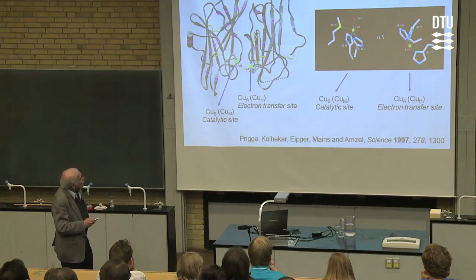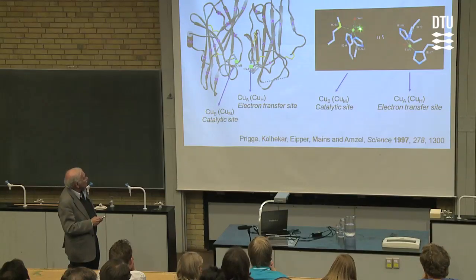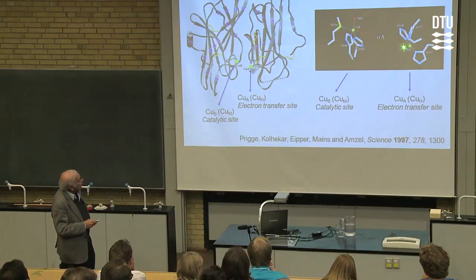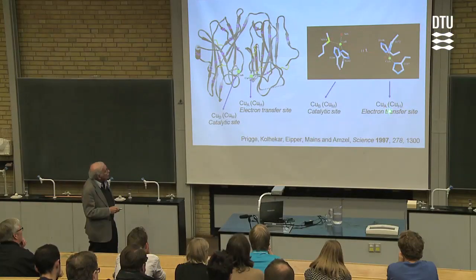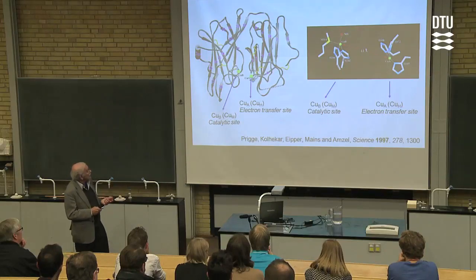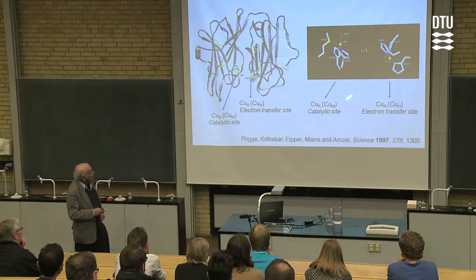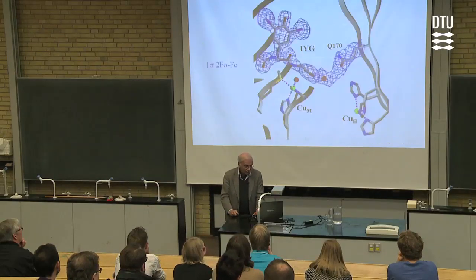I'm going to call the copper in one portion either copper B or copper M — M for the methionine, B because it's second in the sequence — and the other either copper A or copper H, H for the three histidines. Catalysis occurs close to copper M, and copper A is used as an electron transfer group. The reduction of oxygen requires two electrons, and each copper can only provide one electron, so somehow these two coppers will be oxidized and provide one electron each.